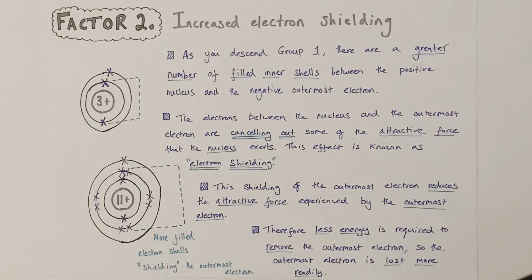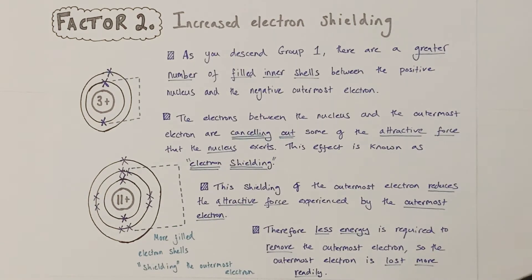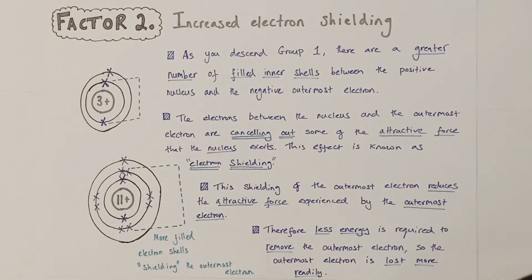Therefore, less heat energy would be required to remove the outermost electron, so that outermost electron would be lost more easily, hence why the group 1 metal atom would be more reactive and lose electrons more readily to other species such as non-metals.